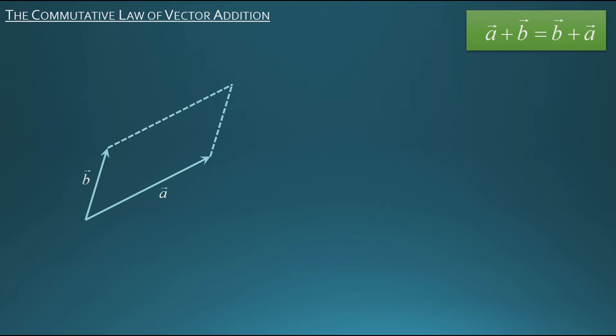So where do we go from here? Well, I'm going to redraw vector b over here. And I can do that because this is a parallelogram, so that new vector b that I've just drawn has the same magnitude and direction as the original vector b that I drew. Now if we look at this vector a and vector b, they're in a tip-to-tail configuration, so I can easily use the triangle law of vector addition to add them together.